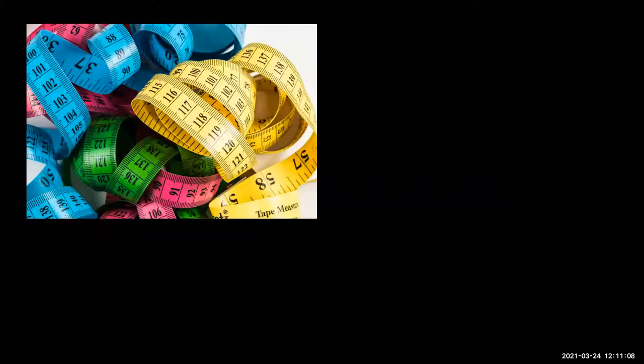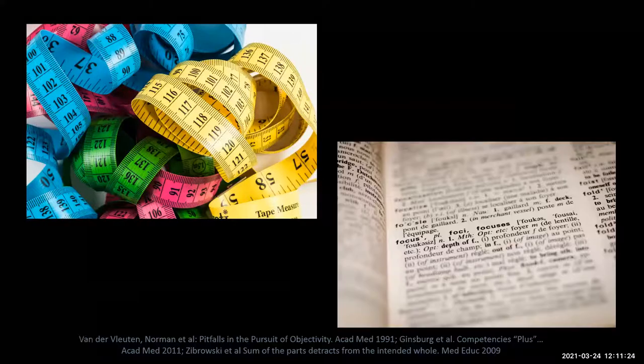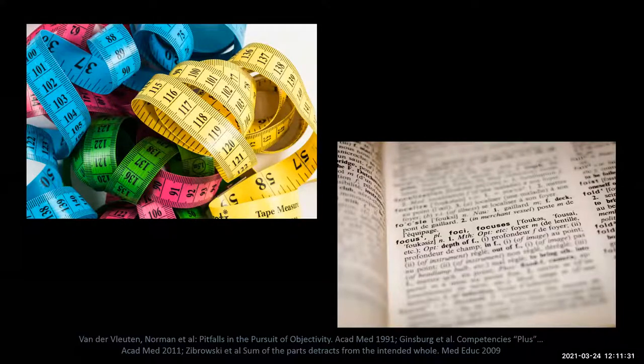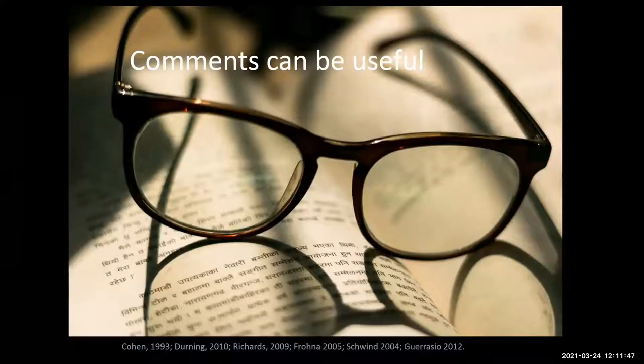So why does this happen? In medicine we're sort of enamored with numbers. They're attractive, they convey a sense of objectivity and precision. We're very used to numbers in science and medicine, but we also know that it's difficult to capture the entirety of a performance and reduce it to a single score. Comments, on the other hand, can capture something different. They're relatively unexplored in the literature, but we tend to overvalue objectivity and undervalue subjectivity, and I think this has led us down a couple of bad paths.